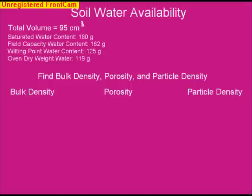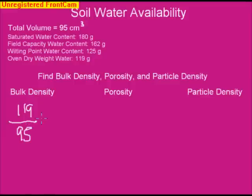The first step is a quick review of the Bulk Density, Porosity, and Particle Density lab. Bulk density is the total oven dry mass over the total volume — in this case, 119 divided by 95 — which equals a bulk density of 1.25 grams per cubic centimeter.